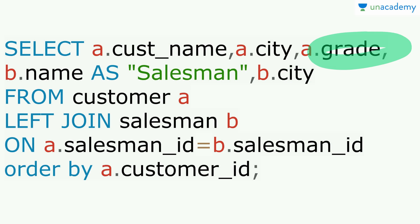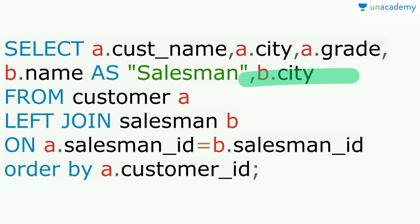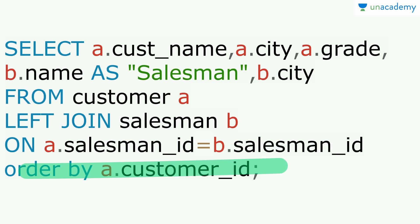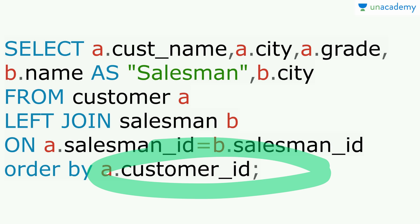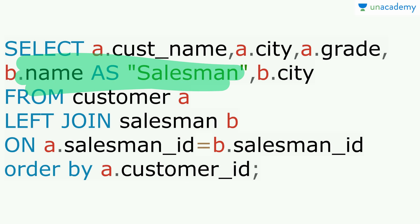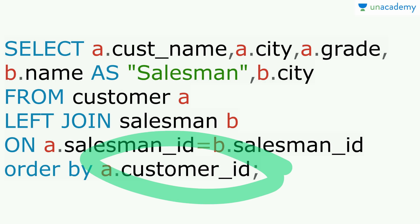Printing customer name, city, grade and salesman name and city FROM customer A LEFT JOIN salesman B ON salesman ID, ORDER BY customer ID. The two customers with no salesman will have null values in the salesman name and salesman city columns, ordered by customer ID in ascending order.